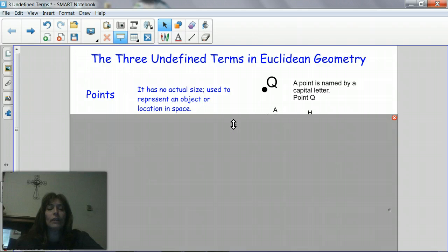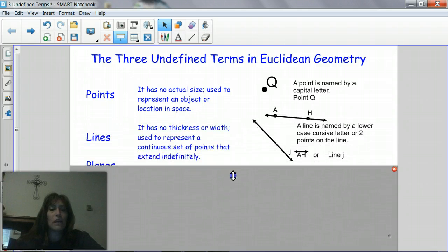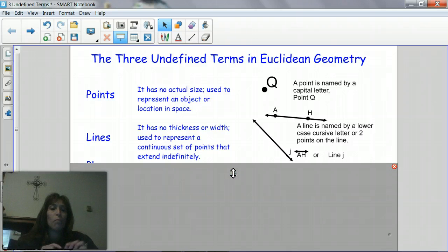On your next flap I want you to go down and it's going to be lines. Remember to make a line we actually just put a whole bunch of little points together in a straight line and that's what made a line and they were collinear. That's what that means, they're points in a straight line which makes them collinear. A line has no thickness or width, it's used to represent a continuous set of points that extend indefinitely.